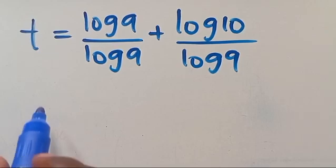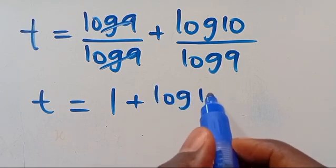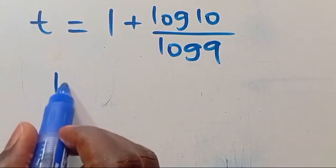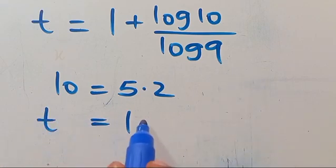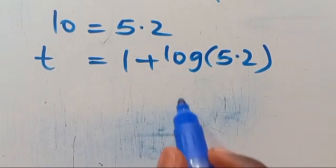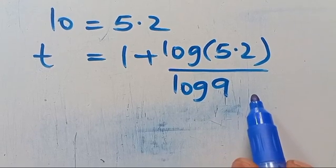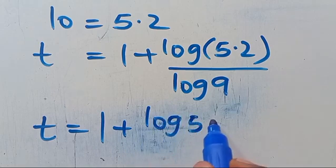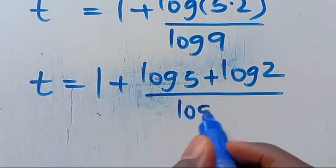From here, we get log 9 divided by log 9, which gives 1, plus log 10 divided by log 9. We can also express 10 as the product of 5 times 2. So putting it together, we have t equals 1 plus log(5 × 2) divided by log 9, which becomes 1 plus log 5 plus log 2, all divided by log 9.